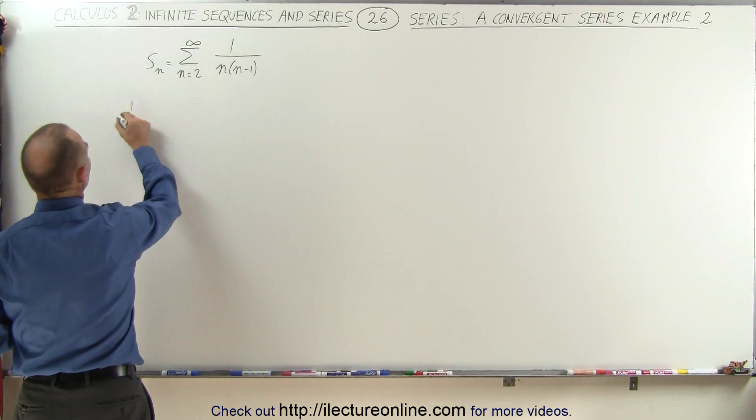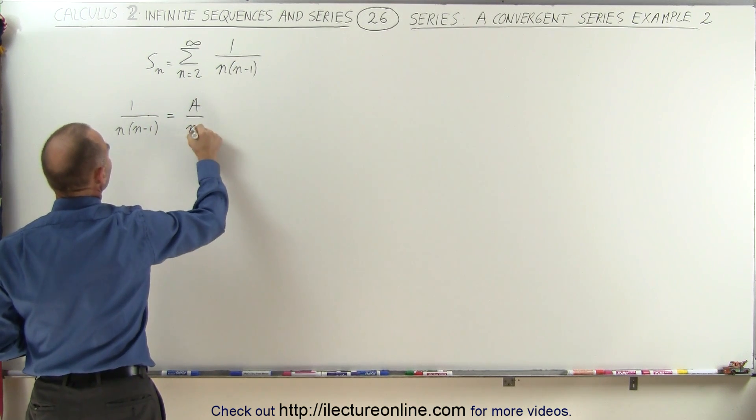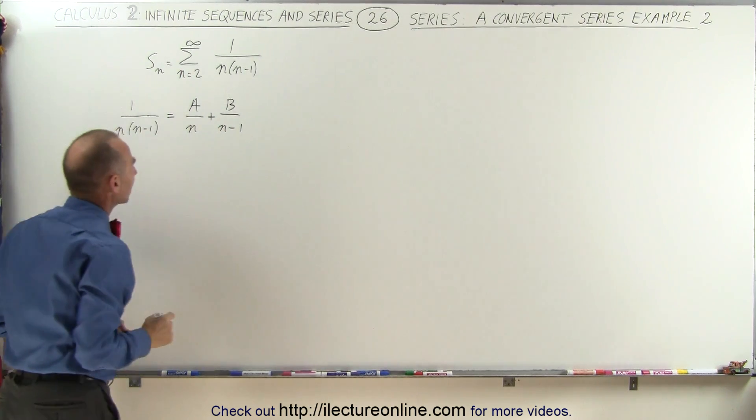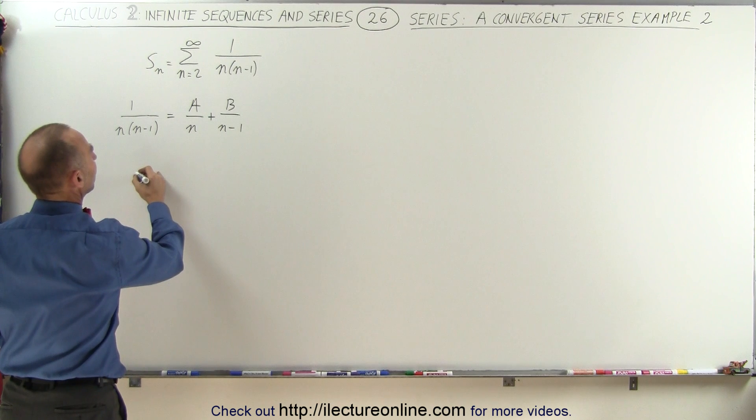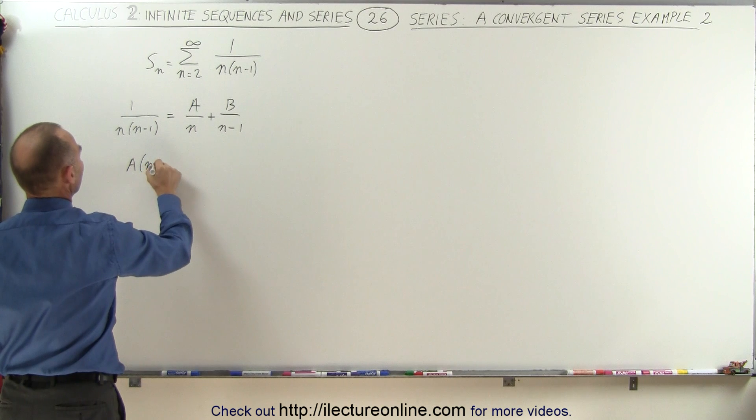We can say that 1 divided by n times n minus 1 can be written as a over n plus b over n minus 1. This means when we cross multiply, we get a times n minus 1 plus b times n divided by n times n minus 1.